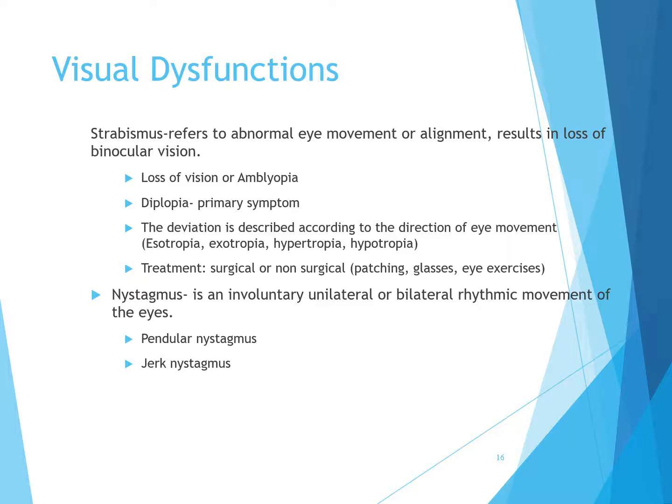Nystagmus is an involuntary unilateral or bilateral rhythmic movement of the eyes. There are two types: pendular nystagmus, which is a regular back-and-forth movement of the eyes — a steady, even oscillation — and jerk nystagmus, where one phase of the eye movement is faster than the other. It goes slow in one direction and then jerks back fast.